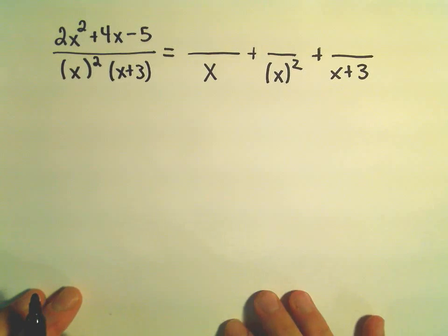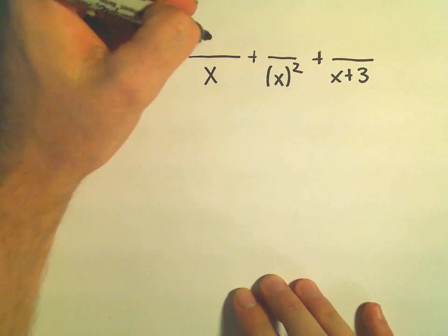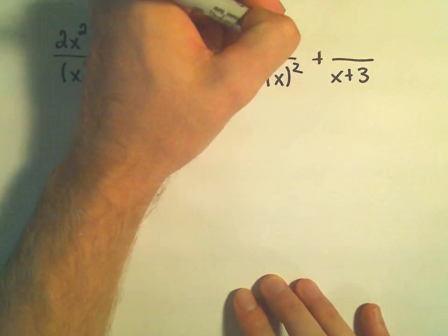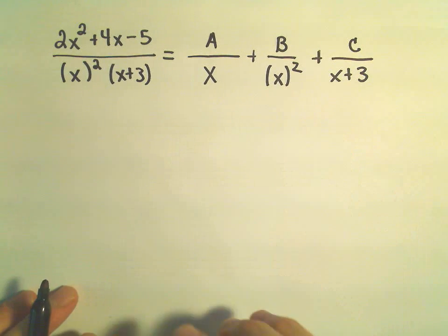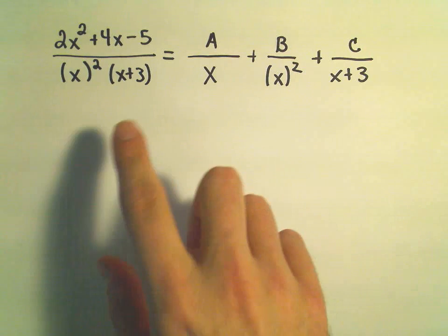So, that's also going to be another fraction. And then we just put constants on top. A, B, and C. Okay, so, one of the little nuances here is just kind of remembering that little trick.